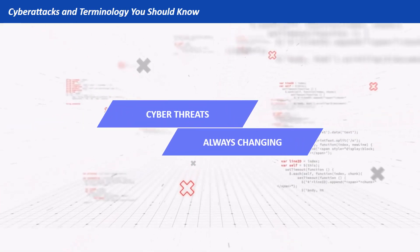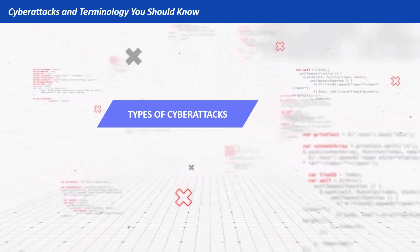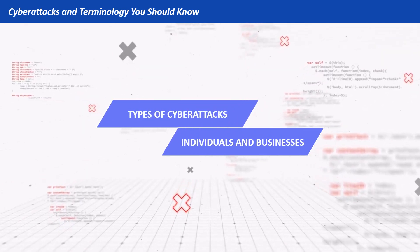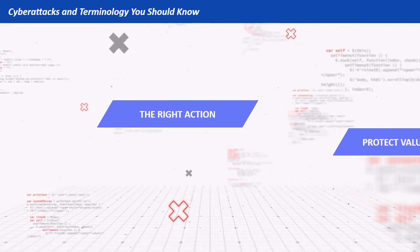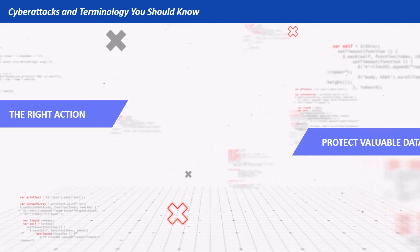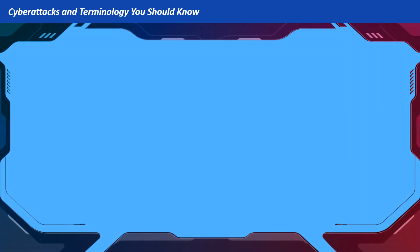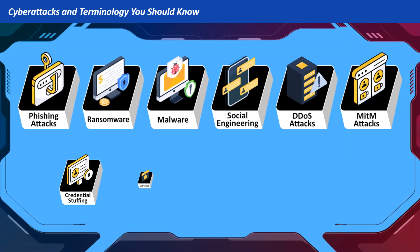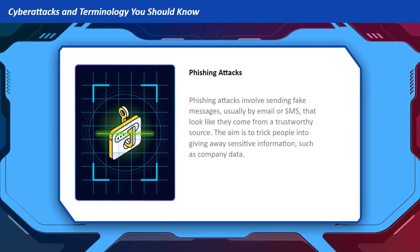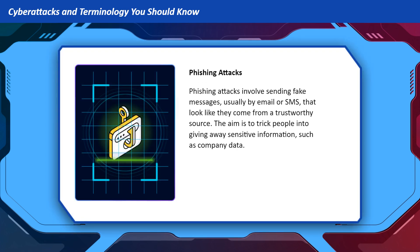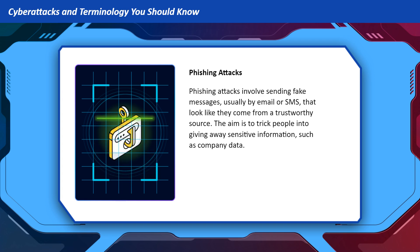Cyber threats are always changing, so it's important to be aware of the different types of cyber attacks that individuals and businesses might encounter. Recognizing these attacks is the first step in taking the right action to protect valuable data. Here are the most common types of cyber attacks that employees may encounter. Phishing attacks involve sending fake messages, usually by email or SMS, that look like they come from a trustworthy source. The aim is to trick people into giving away sensitive information, such as company data.